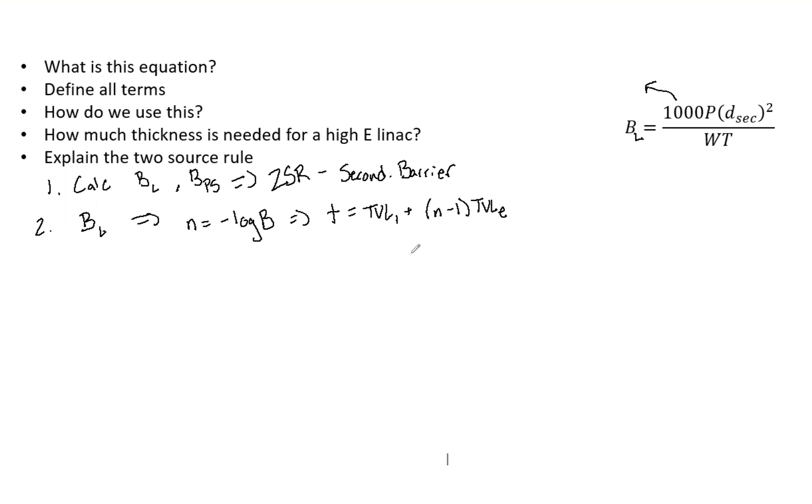So now let's move over to question five here. Explain what the two source rule is. So if you have two different sources, like the scatter and leakage, we're finding the secondary barrier thickness. To compute the TVLs that are needed, you find the TVL necessary for each source. And if that differs by more than one TVL, use the larger TVL. But if they don't, then you add another HVL to the largest TVL. So let me kind of write that down. Hopefully you've seen this before. If so, you can just click off and move on to the next video. If not, let's explain this.